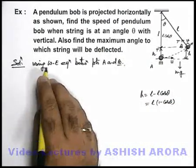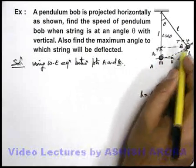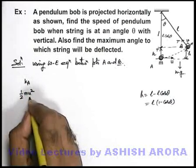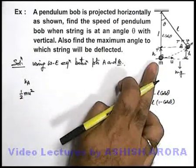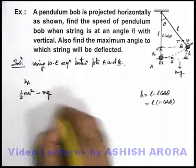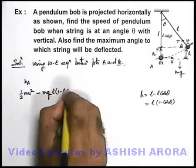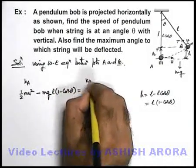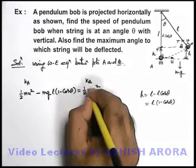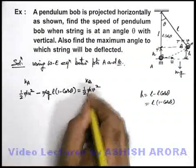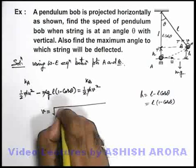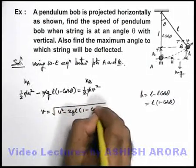Now if we apply work energy equation from point A to B, we can simply state kinetic energy at A was half mu squared, that was the initial kinetic energy. As mg is the only force which is present and doing negative work we can write it minus mg into the displacement h, that is l into one minus cos theta, is equal to kinetic energy at point B, this is half mv squared. In this equation we can cancel this m, and on simplifying we'll get v is equal to root of u squared minus 2gl into one minus cos theta.